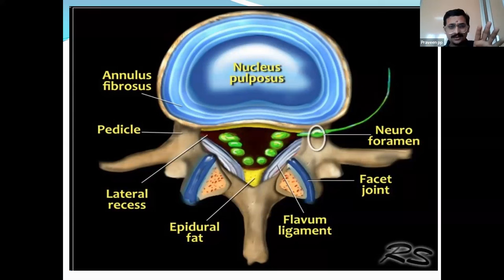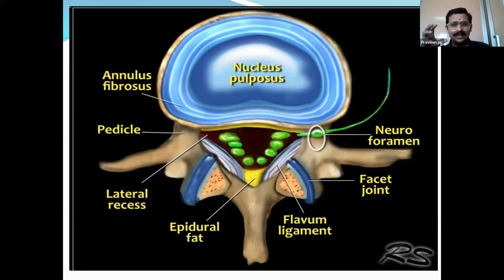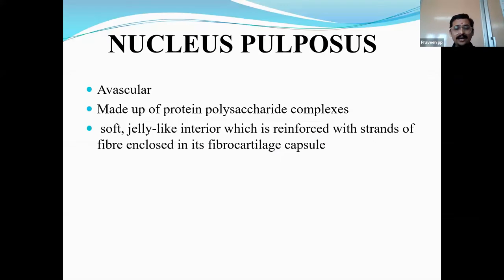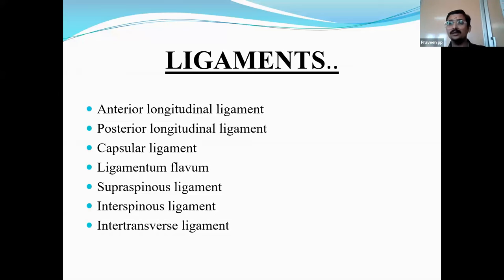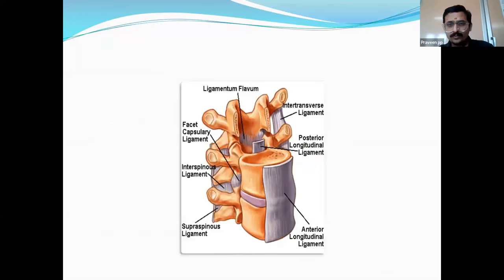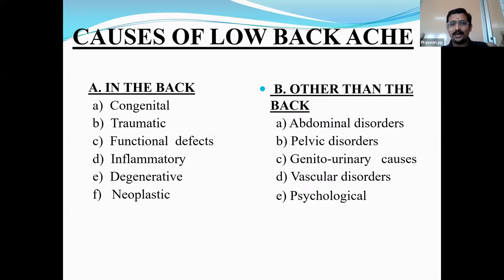The disc has to herniate somewhere. Degenerative disc disease and disc herniations are the most common causes of low back pain. There are many ligaments involved — anterior, posterior, capsular, and flavum ligaments — and ligament spasm and strain commonly occur alongside disc disorders. The main causes of low back pain can start in the back itself or from structures other than the back.